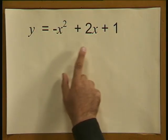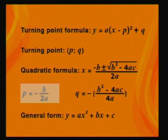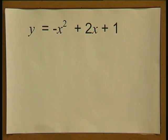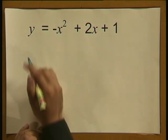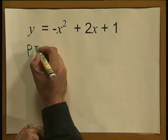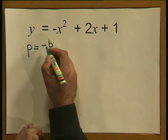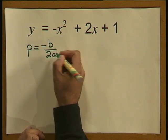Let's sketch an upside-down graph. Here is the formula: y is equal to negative x squared plus 2x plus 1. Using the quadratic formula to find the coordinates of the turning point of this upside-down parabola, we know the turning point is pq and we calculate p using p equals negative b divided by 2a.